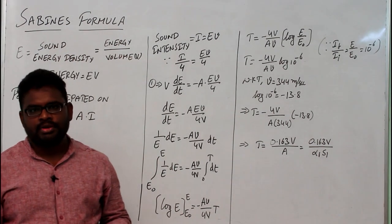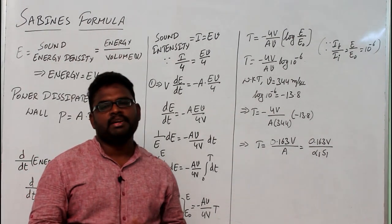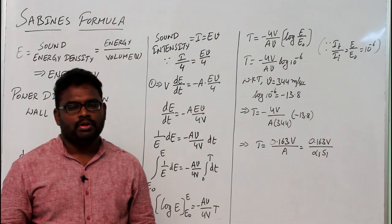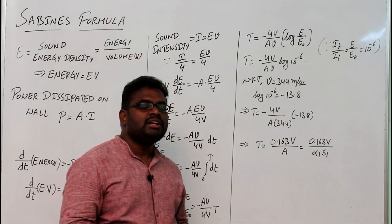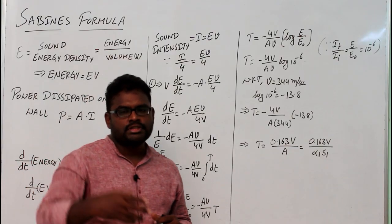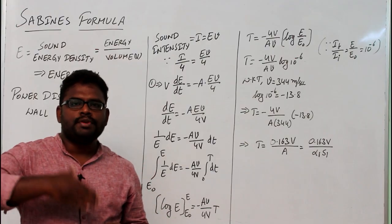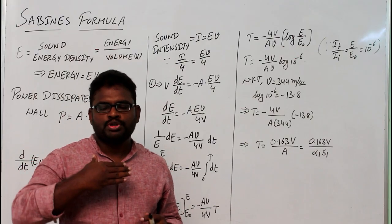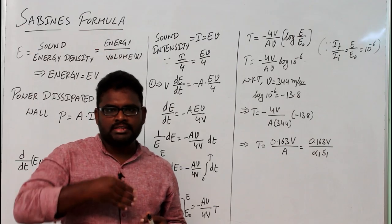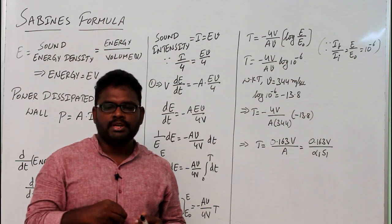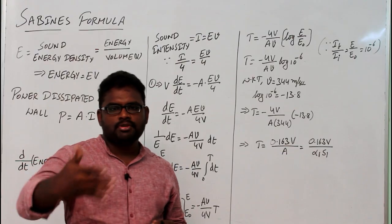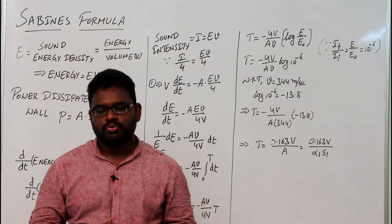We are going to derive an expression for reverberation time, that is Sabine's formula. There are different methods to derive Sabine's formula; I am following the simplest method. Before starting, one has to know what reverberation means. Reverberation means the prolongation of sound even after the source of sound is switched off in a room. If I stop my speech, the sound keeps on prolongating in the room — this process is called reverberation.